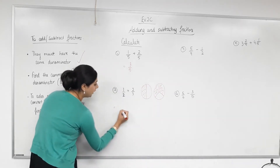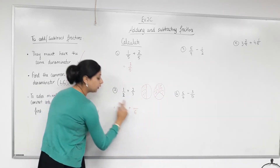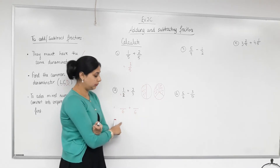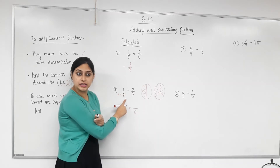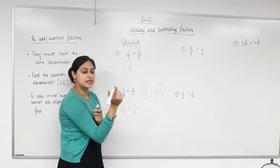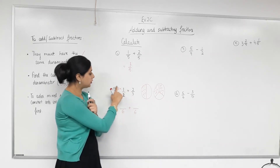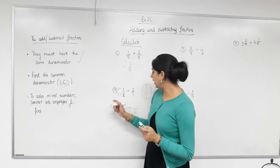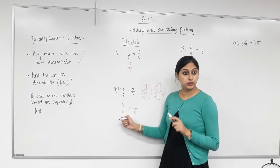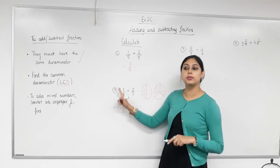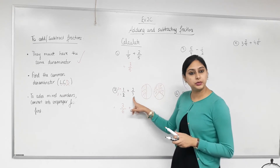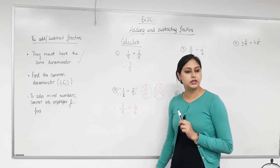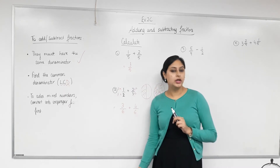Eyes on board. We rewrite each fraction over the lowest common denominator of six. For one-half: what do we multiply two by to get six? Three. So we multiply the top by three as well — one-half equals three-sixths. Remember from yesterday: whatever you do to the bottom, you must do to the top. For two-thirds: what do we multiply three by to get six? Two. So two-thirds equals four-sixths. Now the denominators are the same.